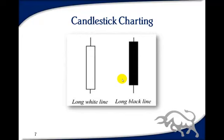Spinning tops suggest any trend may be losing steam and not making headway. The high wave candle is an extreme example with very short bodies and long wicks — another type of spinning top showing a great deal of indecision. On the other hand, long bodies — the long white line and long black line — show strong conviction. You compare the length to previous candlesticks to see if it qualifies as long, since long is relative to the security's typical trading range.